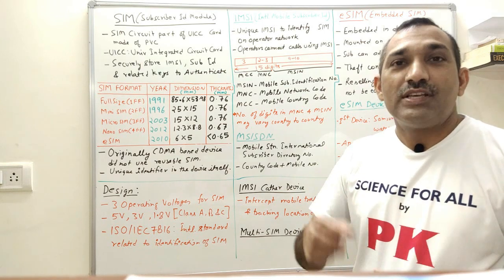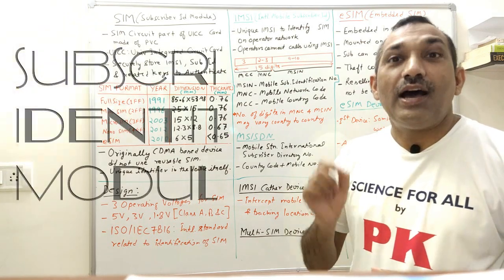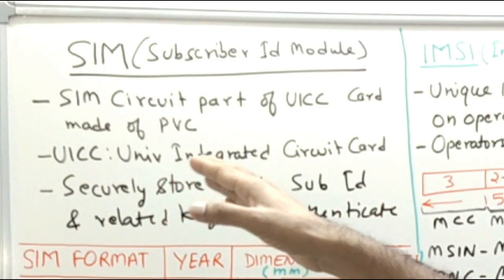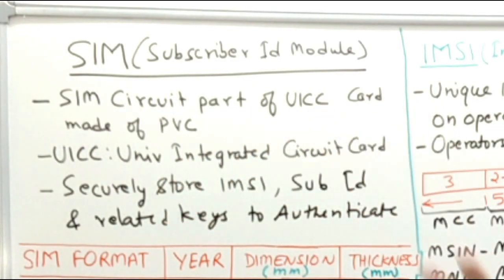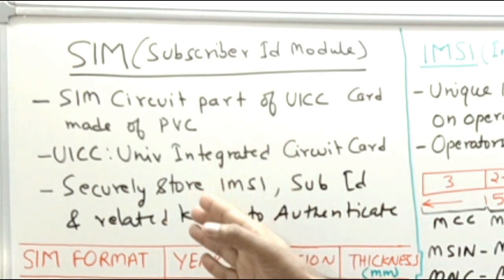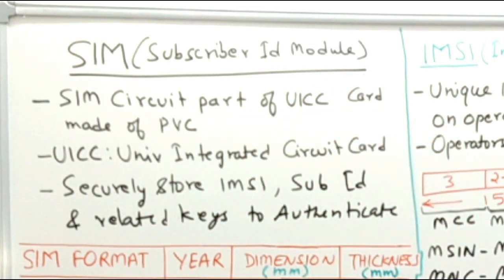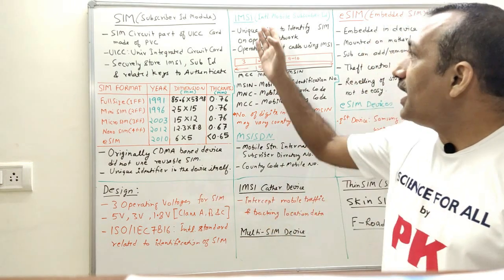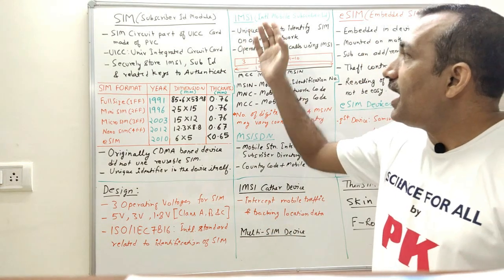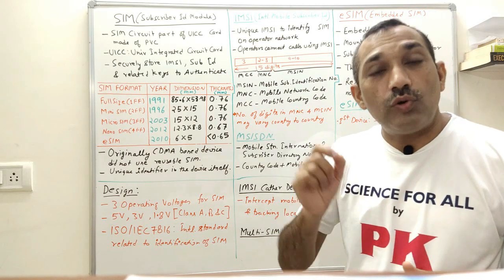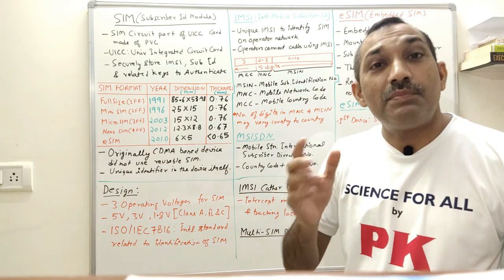So what is a SIM card? SIM is short for Subscriber Identity Module. It is a part of UICC — Universal Integrated Circuit Card — which securely stores IMSI and subscriber identity. These are required to authenticate a subscriber.